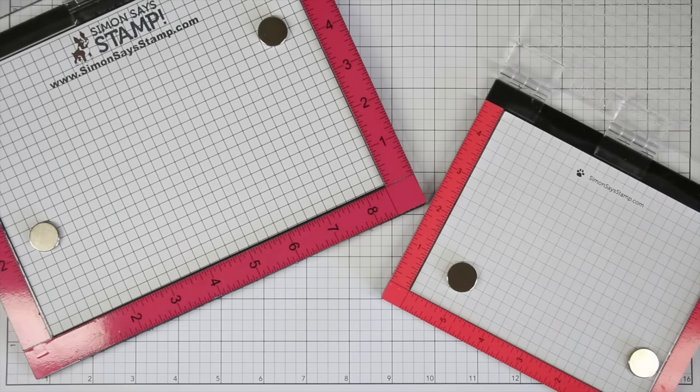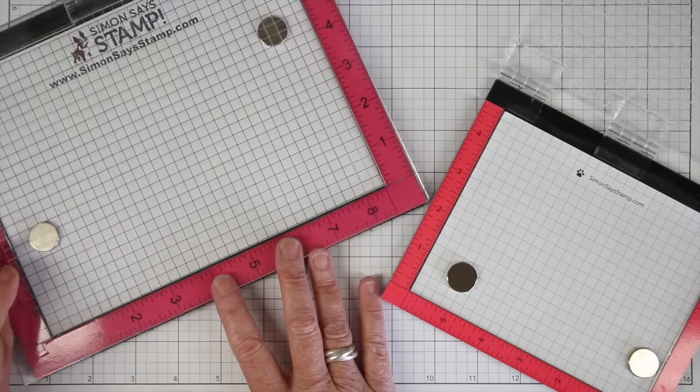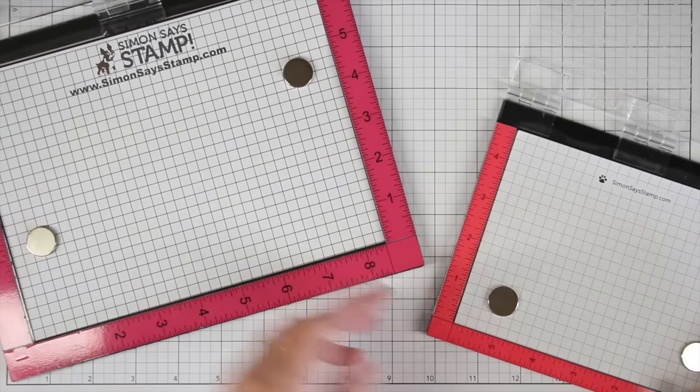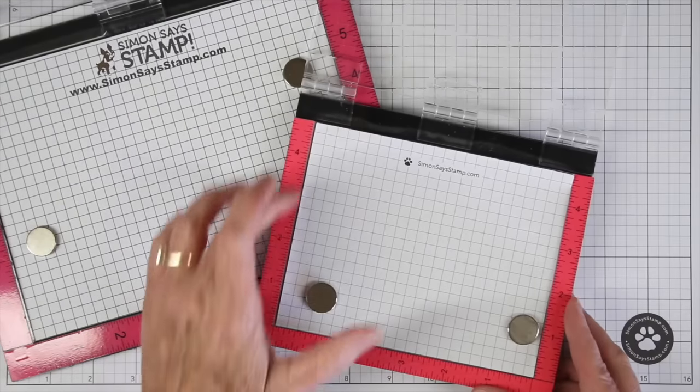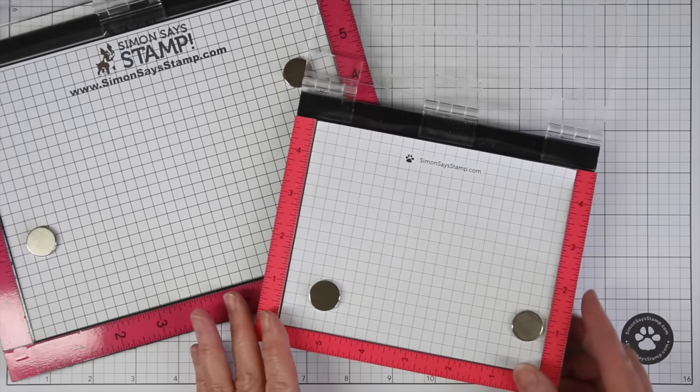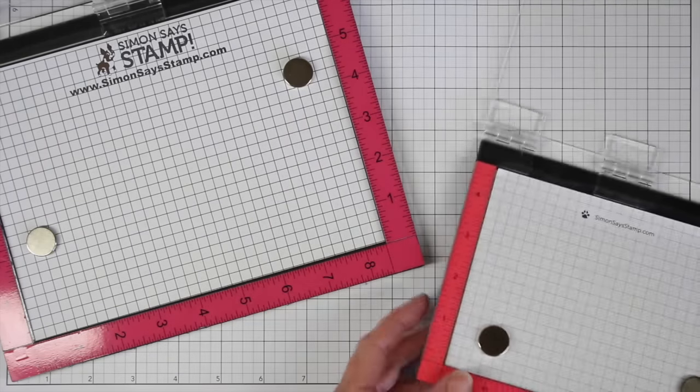I have my two MISTIs here to show you. The larger one, the original one, is six and a half inches by eight and a half inches, so you have a really good size working area in there. And then the mini MISTI, which just came out recently, measures six by five. So that's also really perfect for card making.